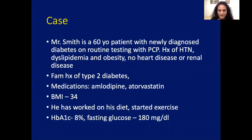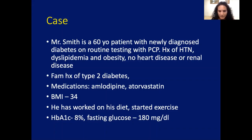Mr. Smith is a 60-year-old patient with newly diagnosed diabetes on routine testing with his PCP. He has a history of hypertension, dyslipidemia, and obesity — common comorbidities we see with type 2 diabetes. He doesn't have any heart disease or renal disease. He has a family history of type 2 diabetes. Medications: amlodipine, atorvastatin. His BMI is 34, putting him in the obese category. He's planning to start working on diet and exercise. His A1C is 8% and his fasting glucose is 180 mg/dL.